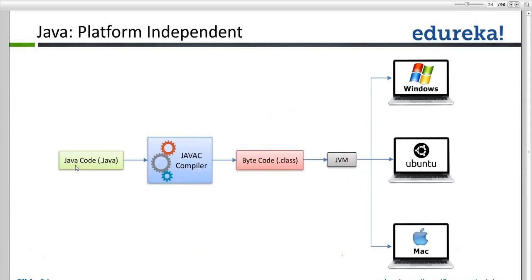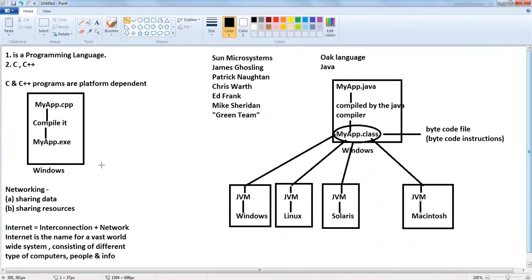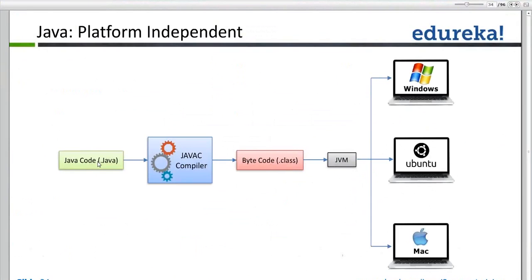Coming to Java: you write your Java program, which is a normal text file saved with the extension .java. It is compiled by the Java compiler to create a .class file — a bytecode file. Every operating system has its own JVM. There is a JVM for Windows, a JVM for Ubuntu, and a JVM for Mac. So JVM is platform dependent.